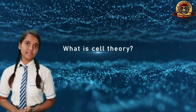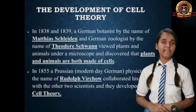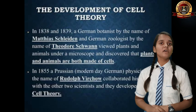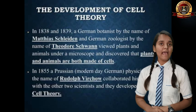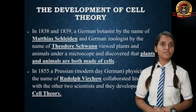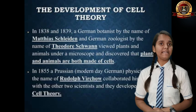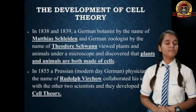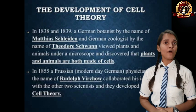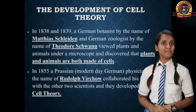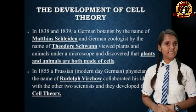What is Cell Theory? In 1838, Matthias Schleiden, a German botanist who studied about the plant cell, saw the outermost membrane which is known as the cell wall. And in 1839, a British biologist who studied about the animal cell and saw the outermost layer which is the plasma membrane. They both proposed the Cell Theory.